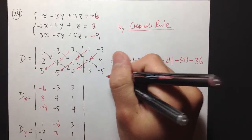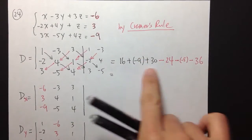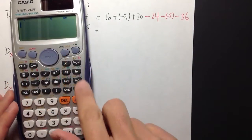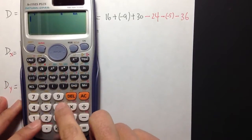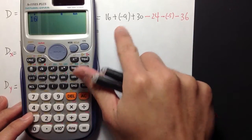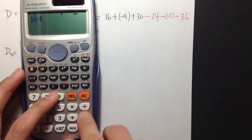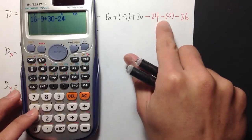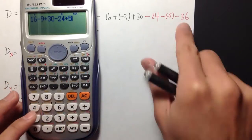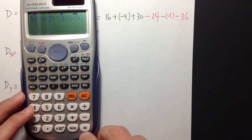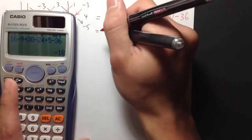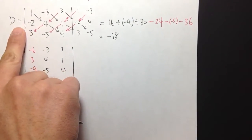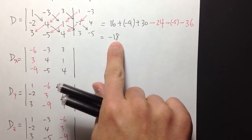Adding all the numbers with a calculator: 16 minus 9 plus 30 minus 24 minus negative 5 minus 36 equals negative 18. So the determinant of matrix D is equal to negative 18.